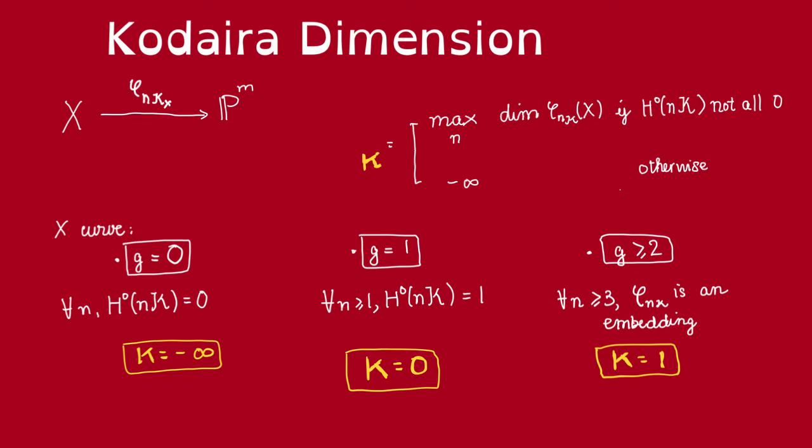So, if X is a curve of genus 0, then none of these classes have any global sections. So, by definition of the Kodaira dimension, this is Kodaira dimension minus infinity.